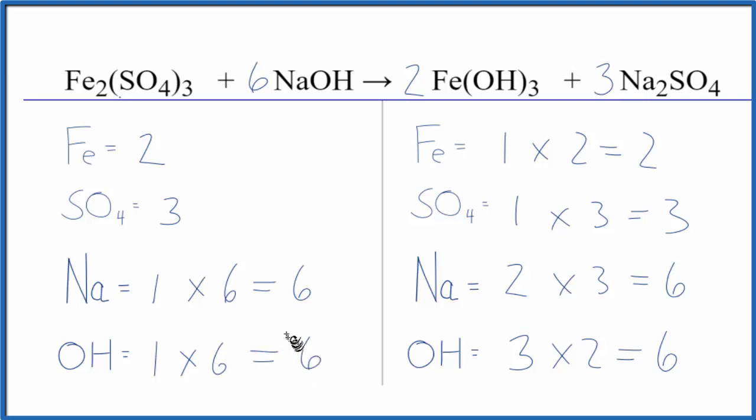That balances the hydroxides, and we're done. This equation is balanced. So you can see by counting these polyatomic ions, we have SO4 here and here, or the hydroxide, OH here and here. That makes it a lot easier to balance. Either way, you get the same answer.